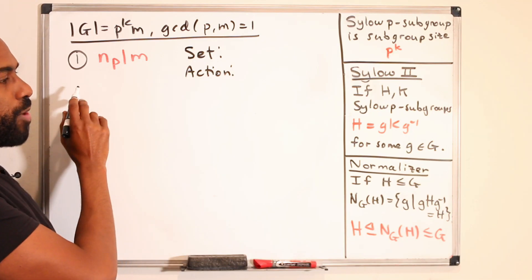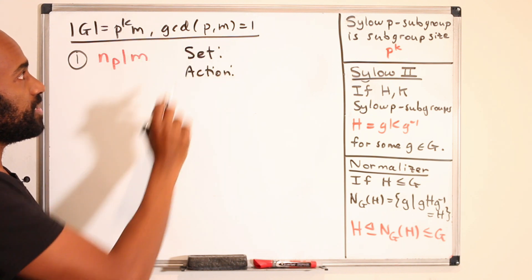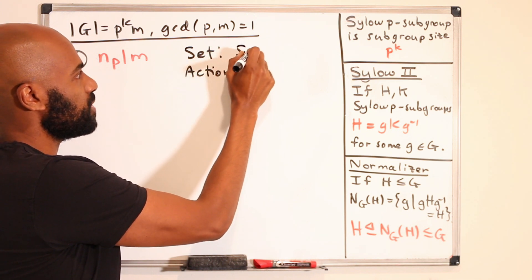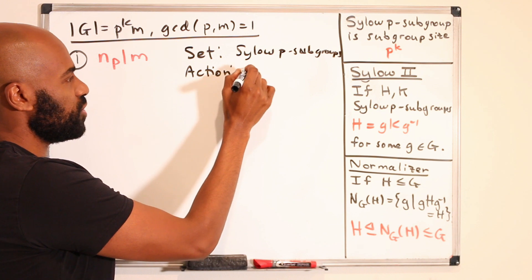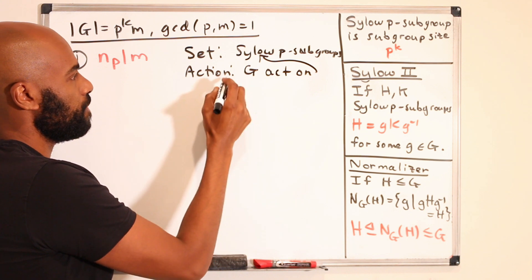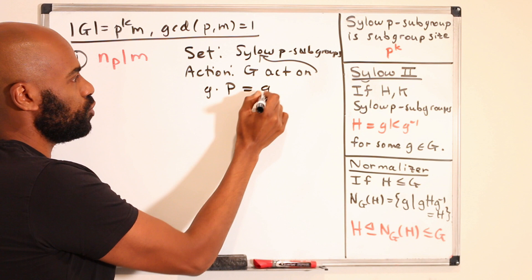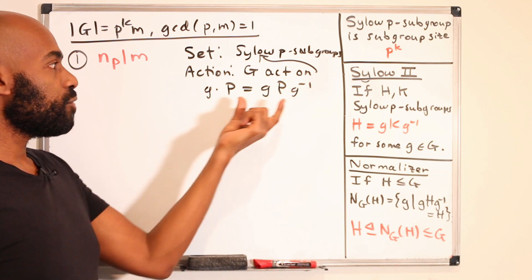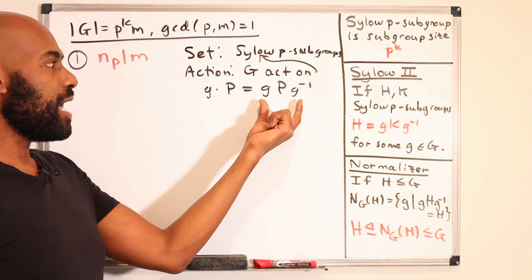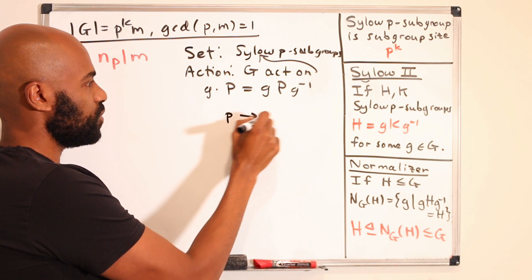For the first part of the proof — that n_p divides m — the set we work with is the set of all Sylow p-subgroups, and the action is conjugation. So G acts on this set by taking any Sylow p-subgroup P and mapping it to gPg-inverse. The result is again a Sylow p-subgroup, since there's a natural bijection between P and gPg-inverse.